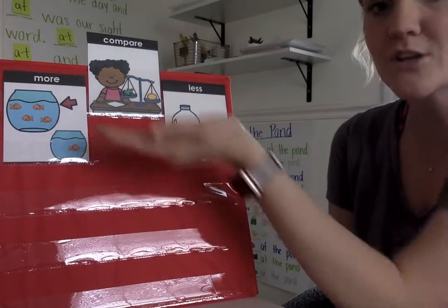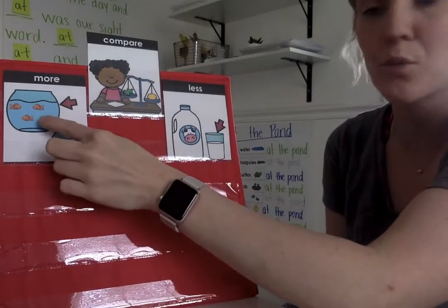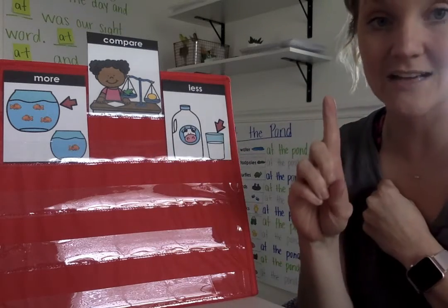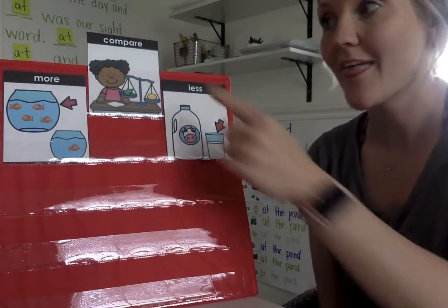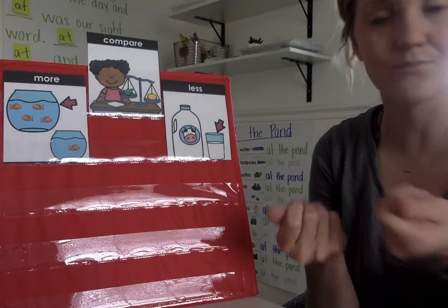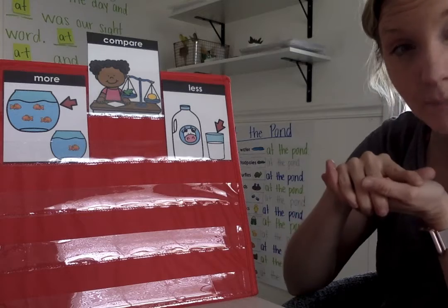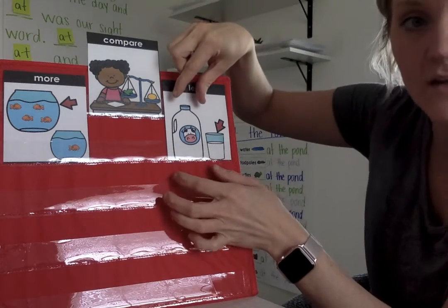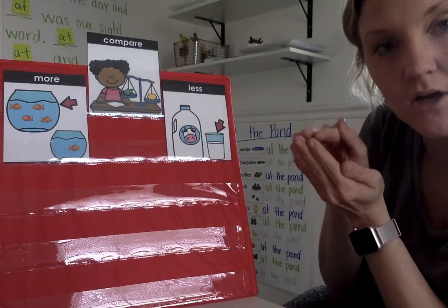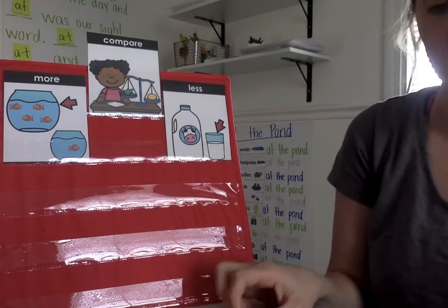Right here we're comparing the amounts of fish — which bowl has more? More means they have the bigger number. You can see how the arrow is pointing to the bigger bowl because it has four fish and the little bowl only has one, so this bowl has more. Over here we're comparing which one is less. Less means smaller — does this big jug of milk have less, or does this little cup of milk have less? The smaller amount would be the glass of milk.